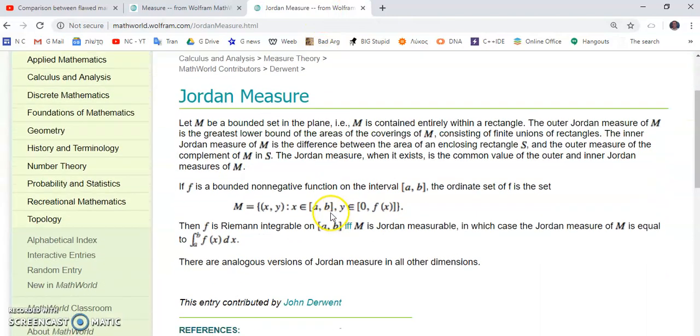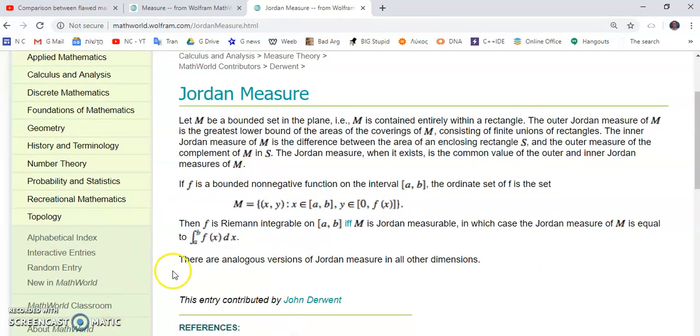Jordan measure, basically, is described here in this entry by MathWorld. And it says that if f is a bounded non-negative function on this interval, then m, which is described by this statement here, means it's Jordan measurable. And so, basically, the measure of m is asserted to be equal to this integral here.